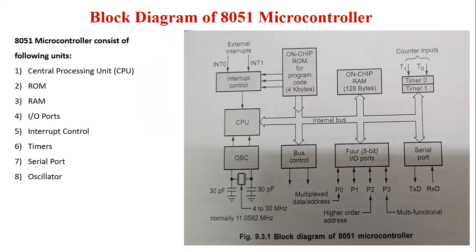This figure shows the internal block diagram of the 8051 microcontroller. It consists of a central processing unit, two kinds of memory sections — data memory RAM and program memory ROM — input/output ports, control logic needed for timer or counter, serial port, and interrupt functions. You can see all the blocks on this block diagram.